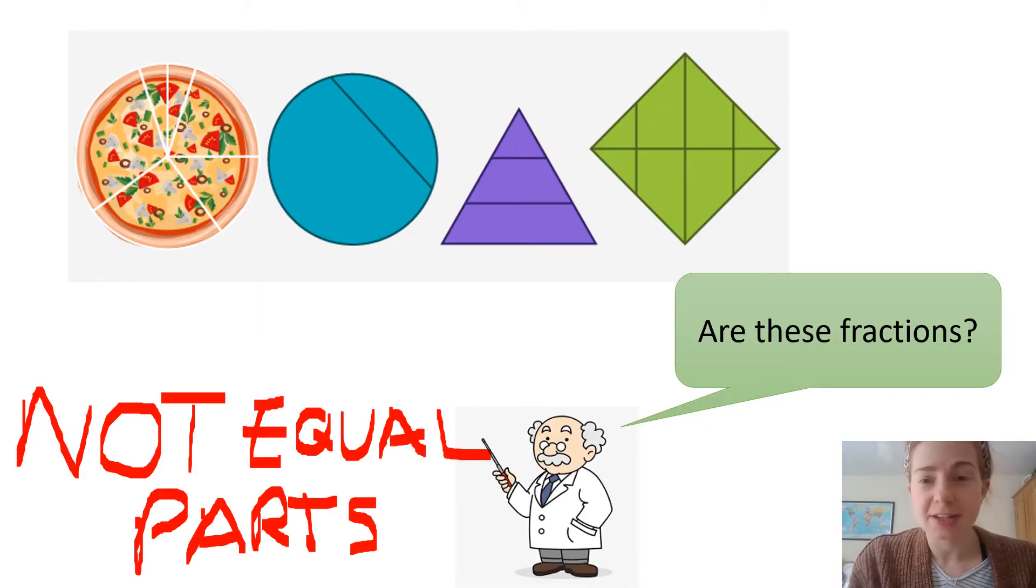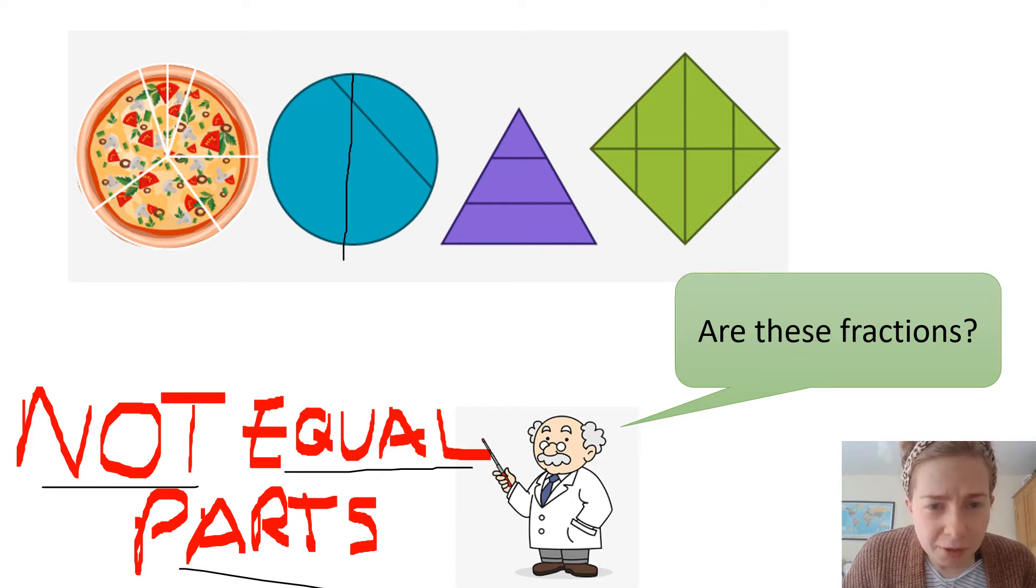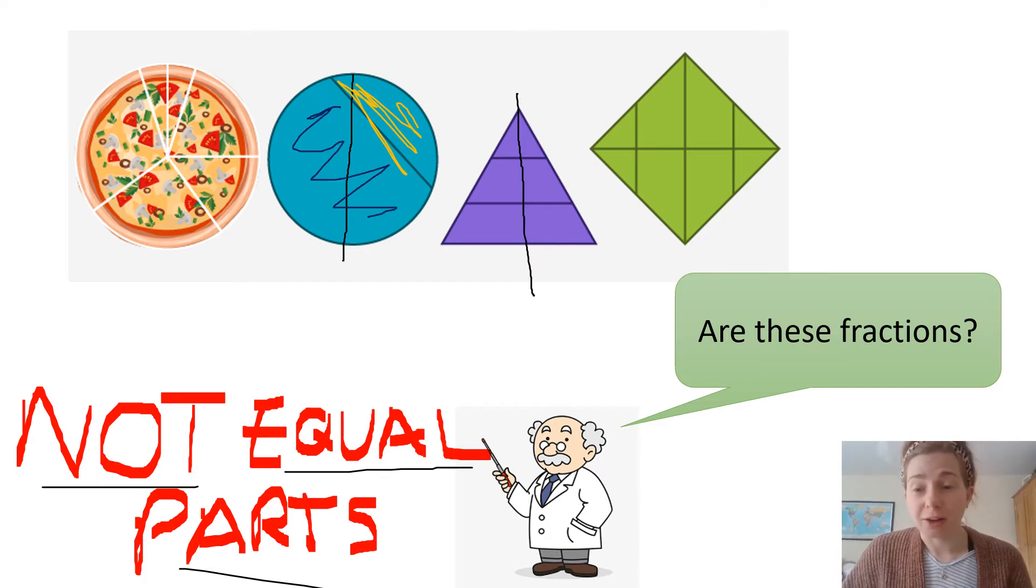When we look at these ones, these are not fractions. These shapes have not been divided into fractions, because they are not in equal parts. This is really important. This circle, that is not being split equally down the middle. This triangle's not being split equally down the middle. They're very uneven, these sizes. And remember, fractions have got to be equal parts. So, none of these shapes are showing us fractions.